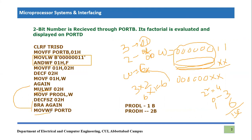So what we are doing is Move W to F Port D. The working value, which is six, goes to Port D. Remember Port D is our output port, so Port D will display six. The number that was input was three and its factorial is correctly calculated as six. That's how this program calculates the factorial.